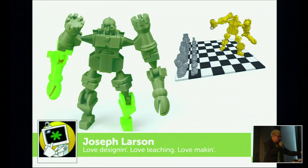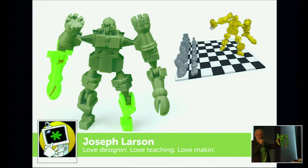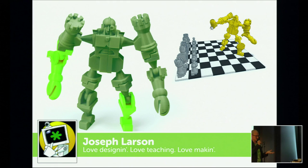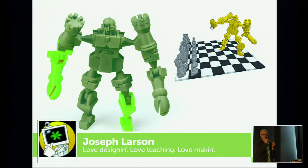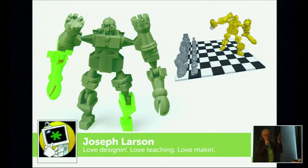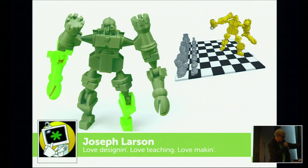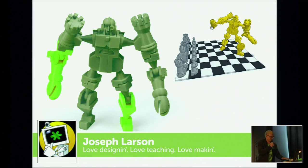Here you see a cute little robot which is actually a chess set. It may look like a robot, but it's a chess set. This was done by Joseph Larson — probably the first design he ever made in Tinkercad. It was for a competition with MakerBot. The design challenge was to design six chess pieces: king, queen, pawn, bishop, rook, and knight. He came up with this idea, and now you know who the winner was. You can take all the pieces off and have a full chess game — he took chess to the next level.